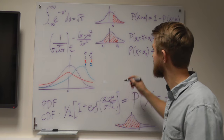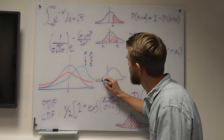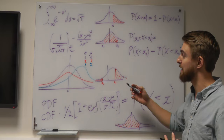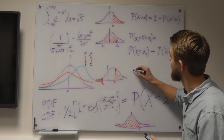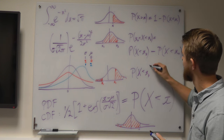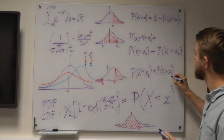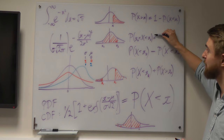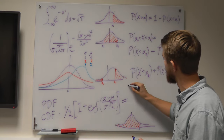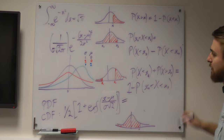The last case is finding the probability of being outside a certain interval — less than xA or greater than xB. Clearly, that is just 1 minus the probability of being within the range between xA and xB.